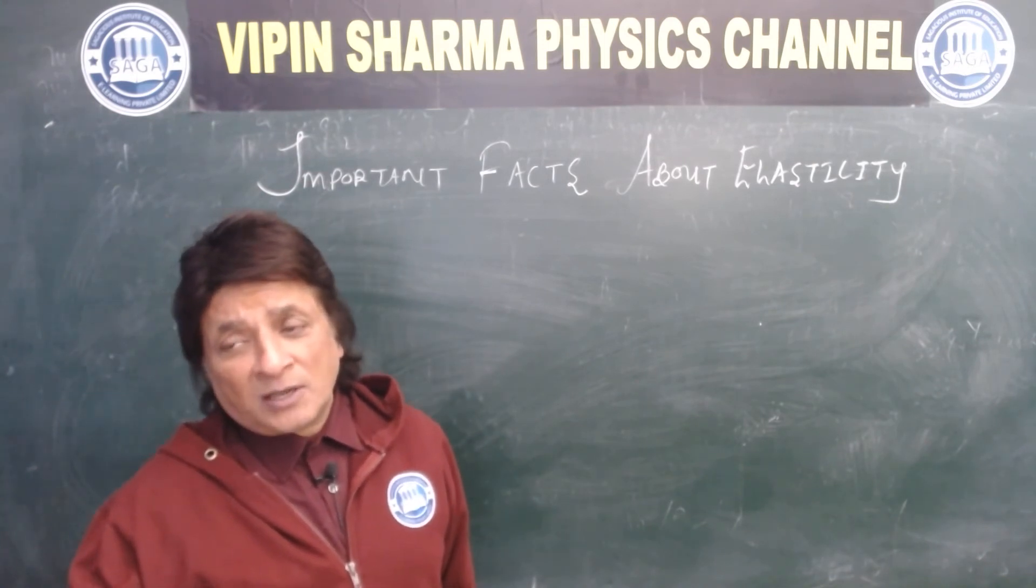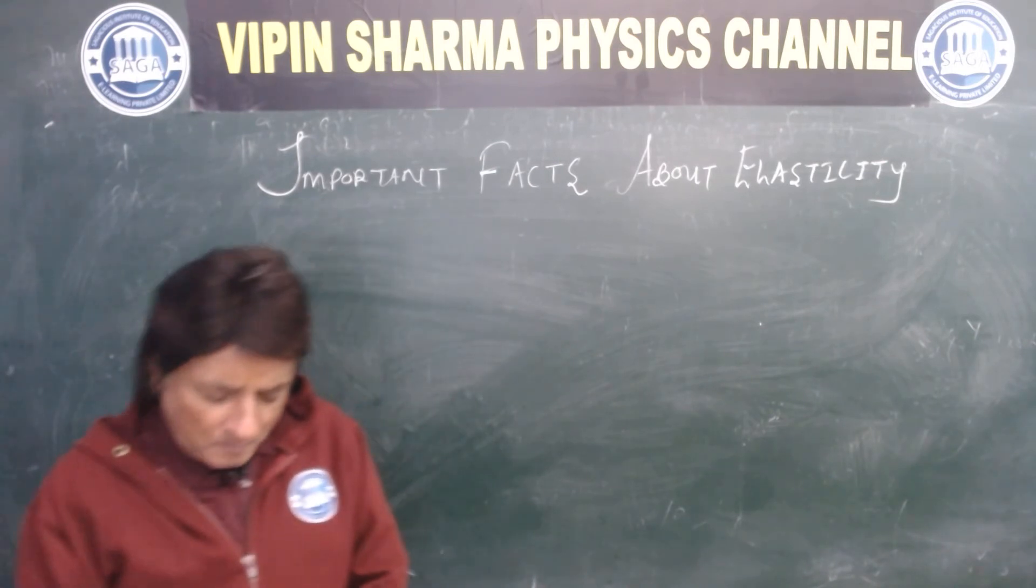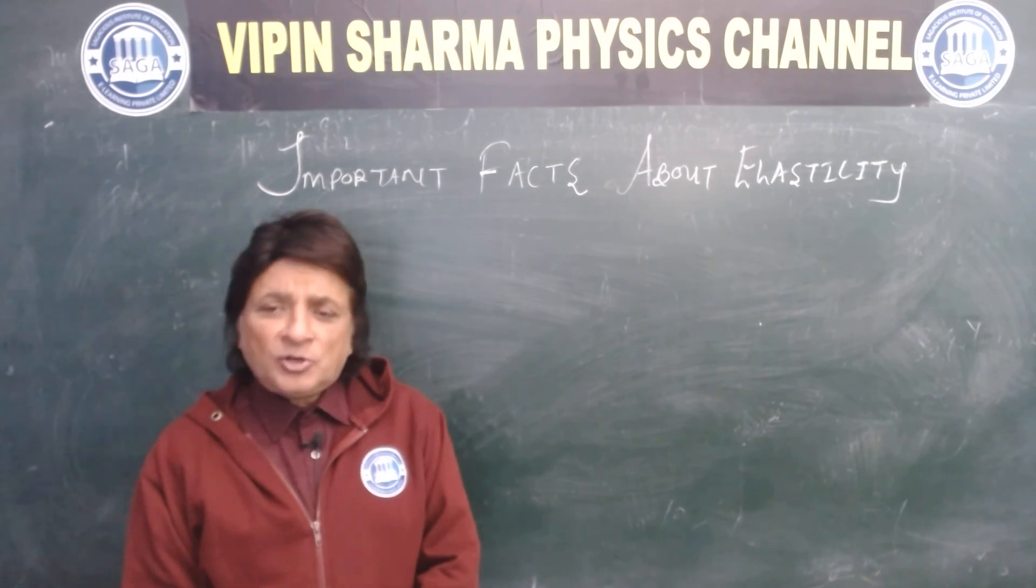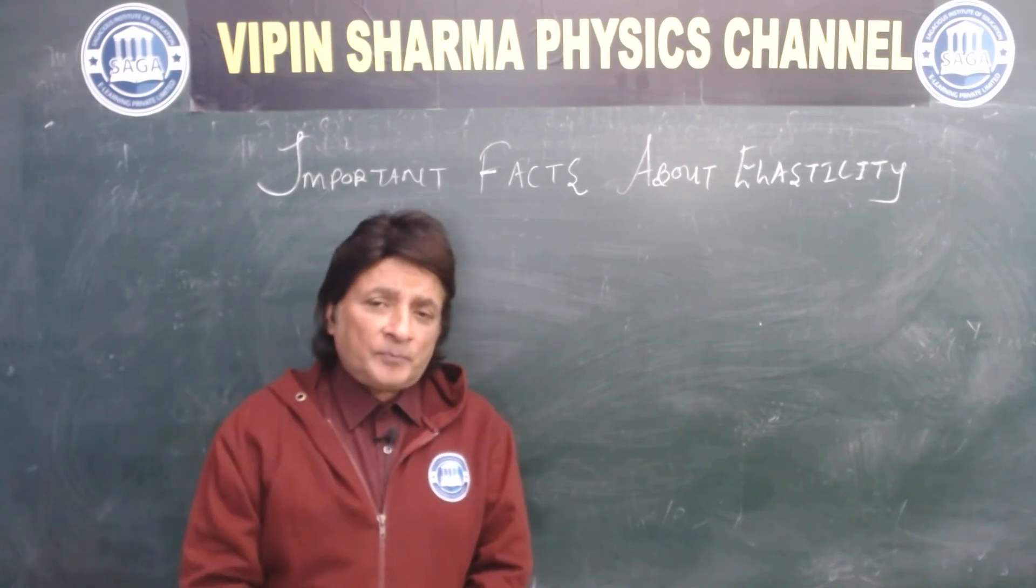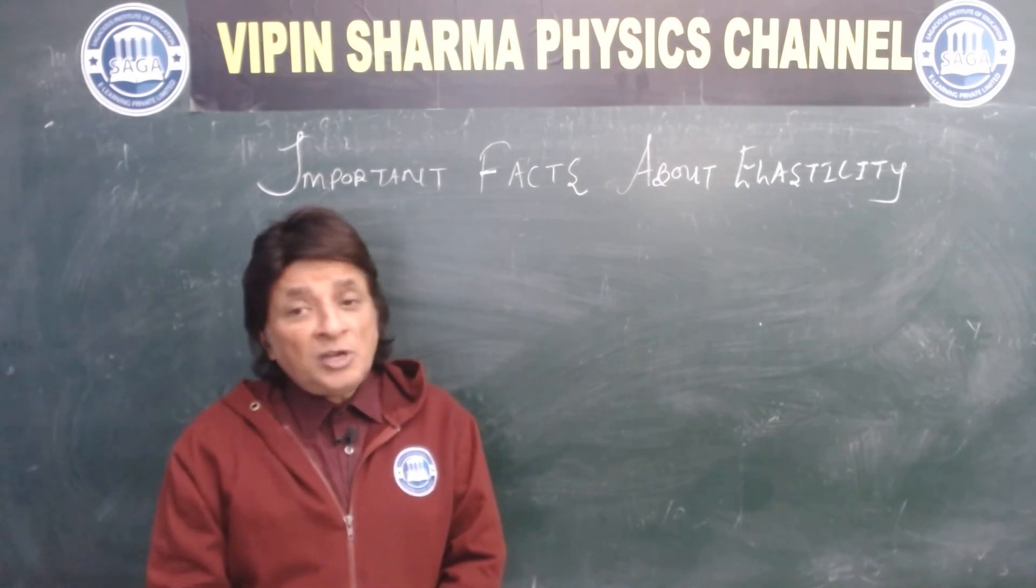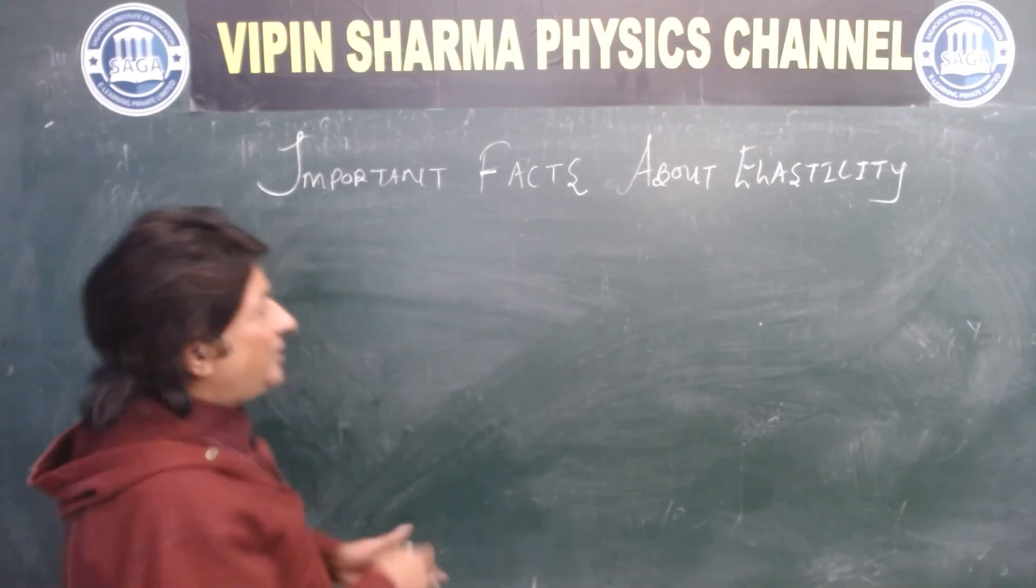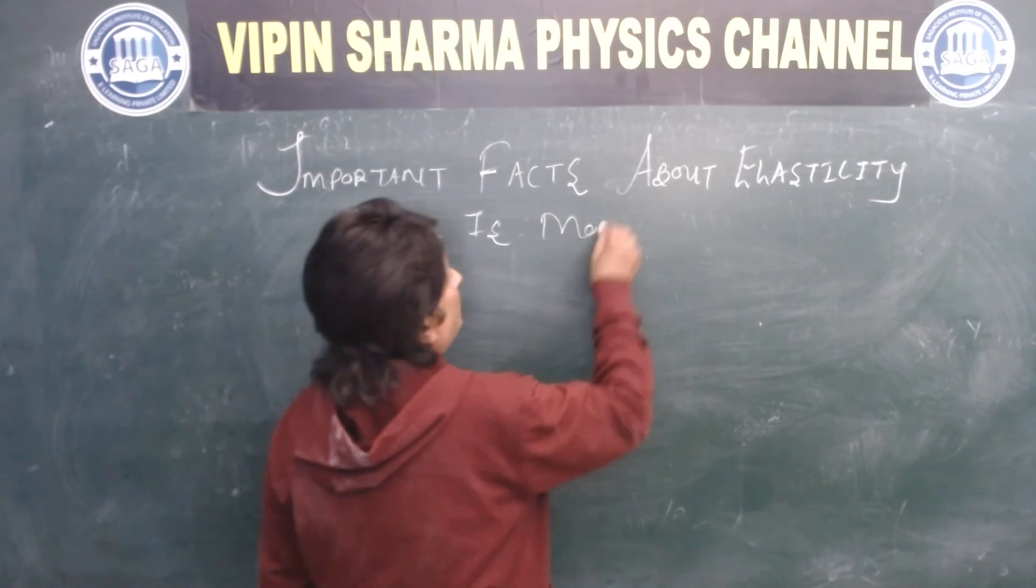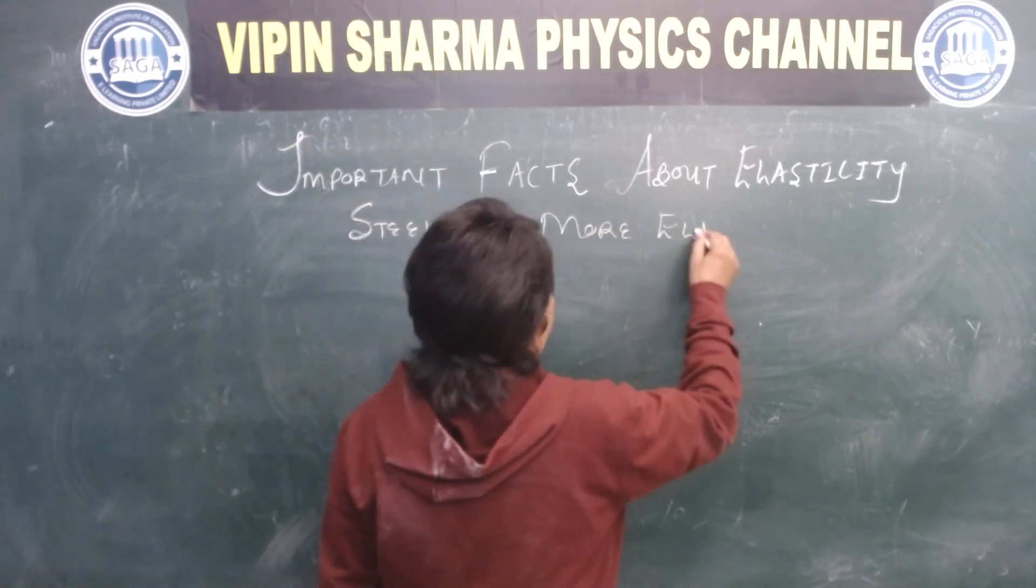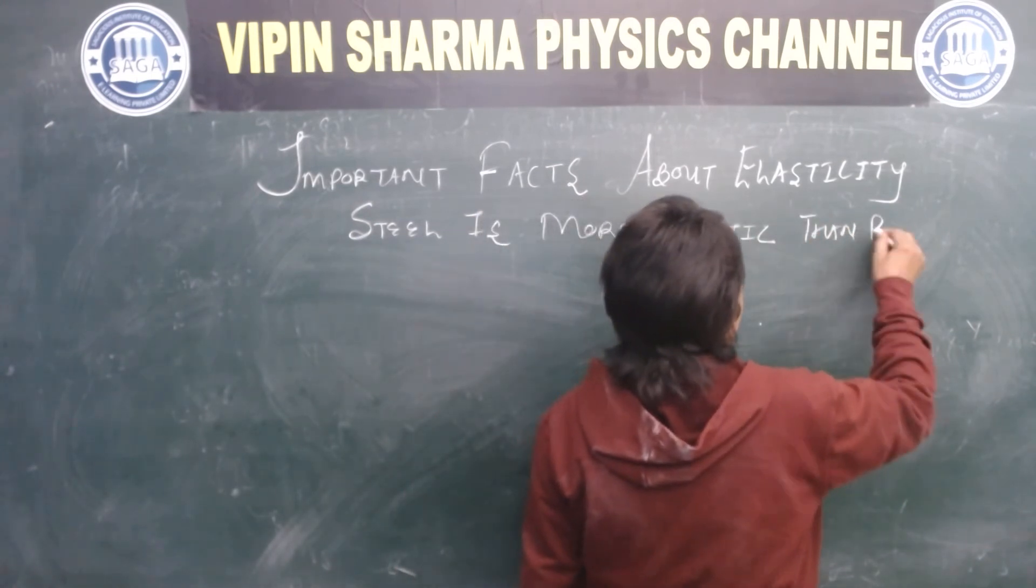Steel ka chamach le liji hai, its dimension ko halka sa temporary change karenge jab hum use per bahut force lagta hai. So steel is more elastic than rubber. You're all opposing this - how is steel more elastic than rubber? Many students have great confusion on this point.